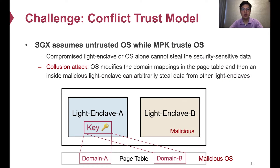However, there exists one challenge: the trust models of MPK and SGX do not match. Specifically, MPK requires trusting the underlying OS to faithfully configure the page table with correct domain IDs, while SGX usually assumes an untrusted OS. Although a compromised light enclave or compromised OS alone cannot steal the security-sensitive data from one light enclave, the collusion attack is possible. For example, the untrusted OS can modify the domain ID of one page in light enclave A to the private domain of light enclave B in the page table entry. Afterwards, the malicious light enclave B can steal light enclave A's secure data.